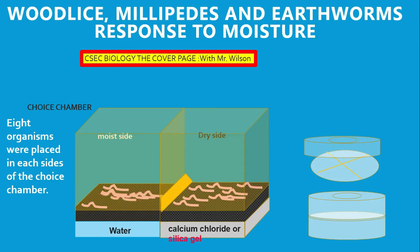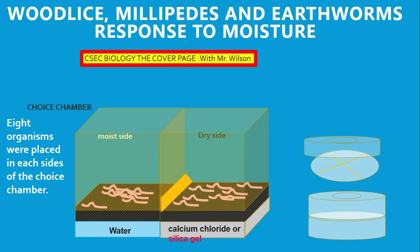To create that dry condition we have used calcium chloride, or silica gel could be used. We're using a choice chamber that was made, but a real choice chamber looks something like the diagram to the right of your screen.